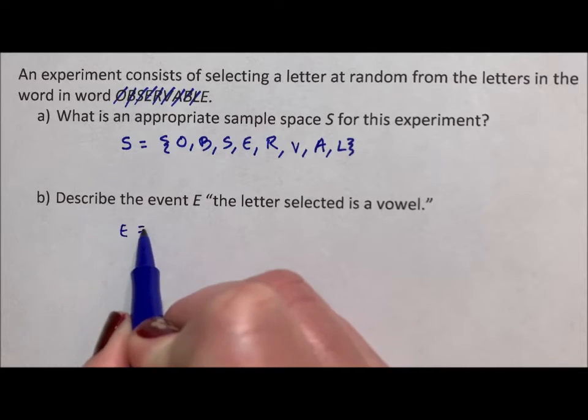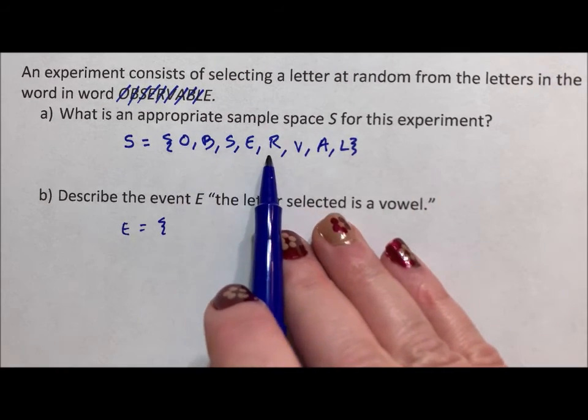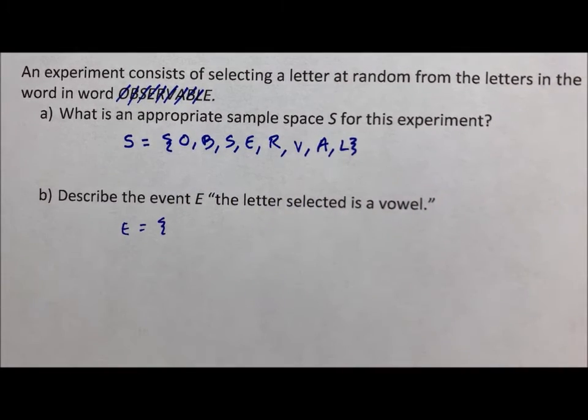So event means subset. It could be the whole thing. It could have been all one, two, three, four, five, six, it could have been all eight letters, or it could be any set of letters, eight or less. In this case, it is a vowel.